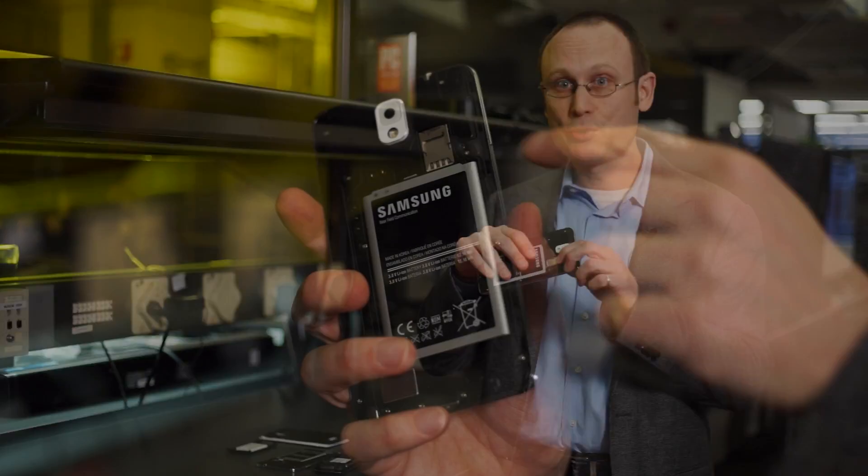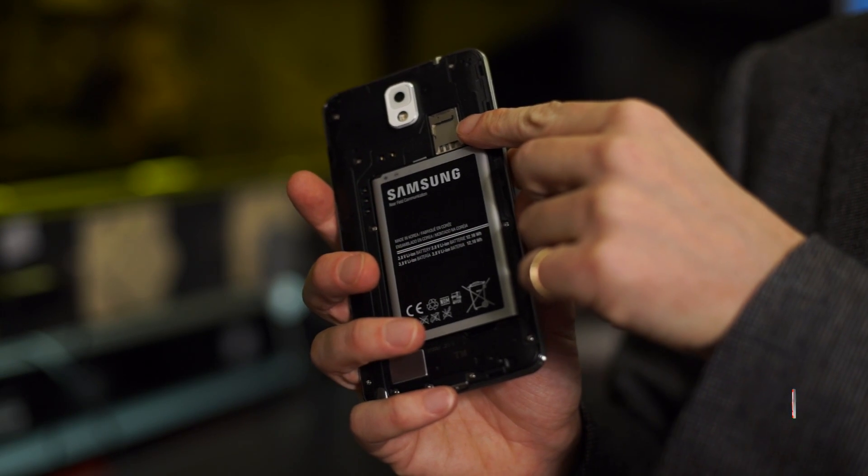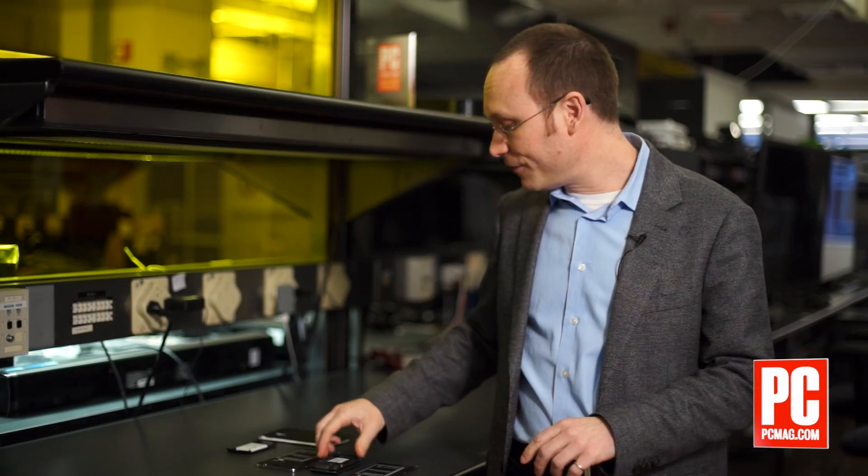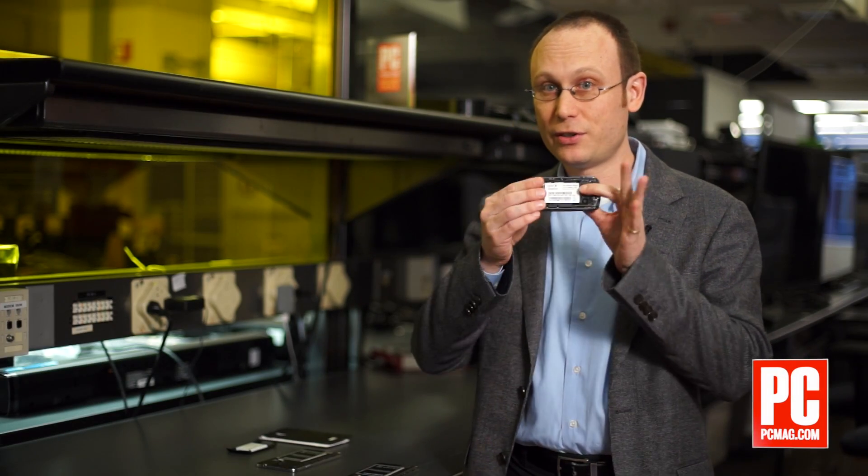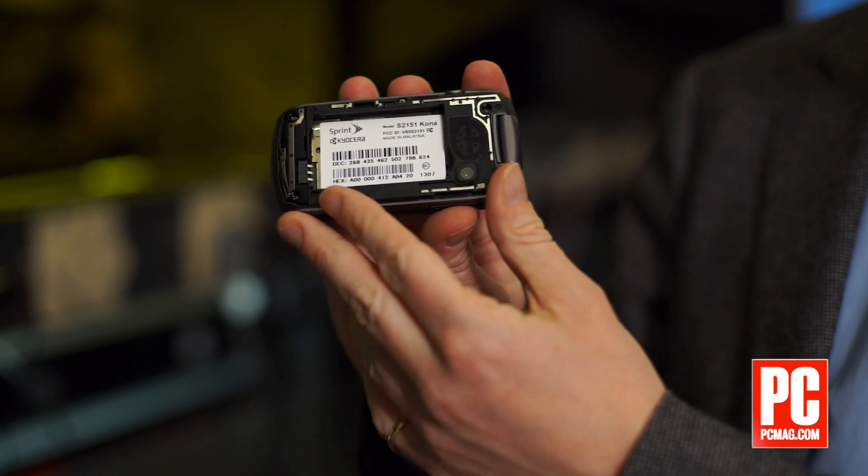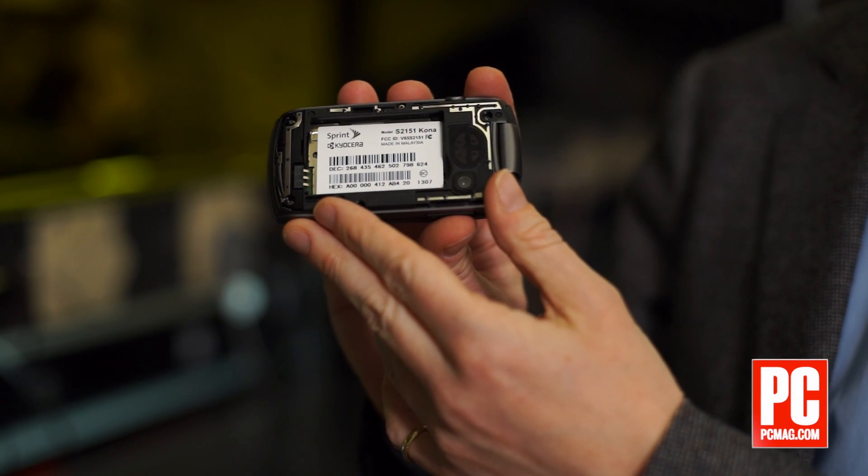GSM networks and phones, like this T-Mobile phone, use removable SIM cards to store their subscriber data. CDMA phones, like this Sprint phone, don't. No SIM card. They verify all of their phones against a list on the network side.